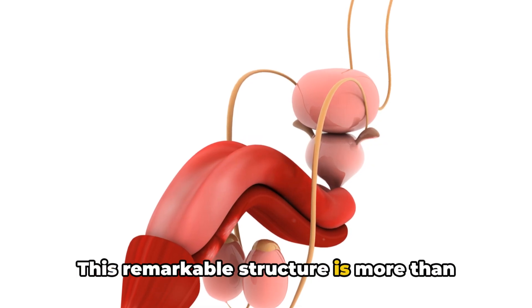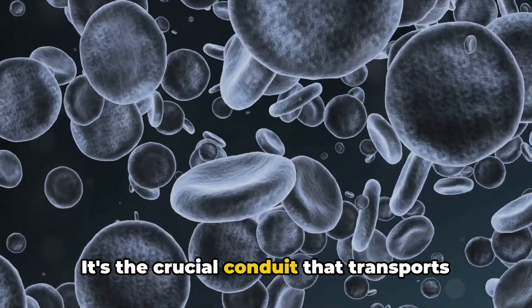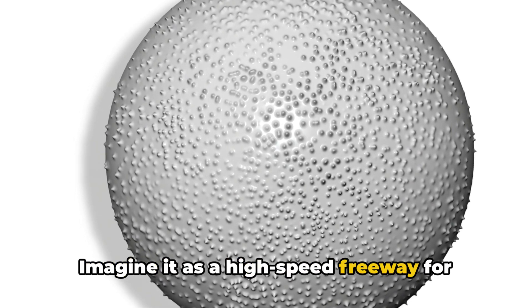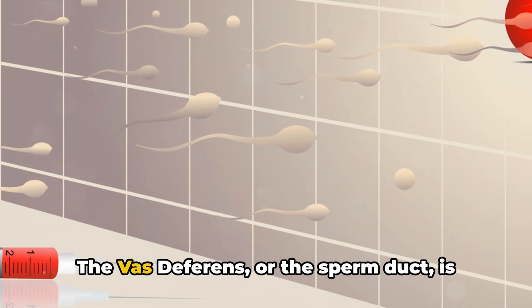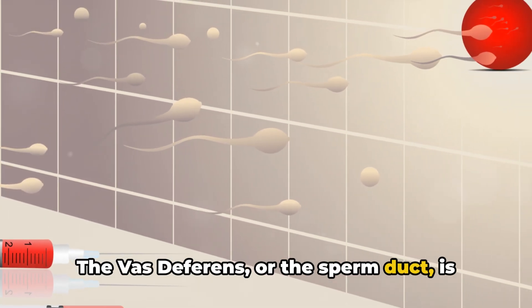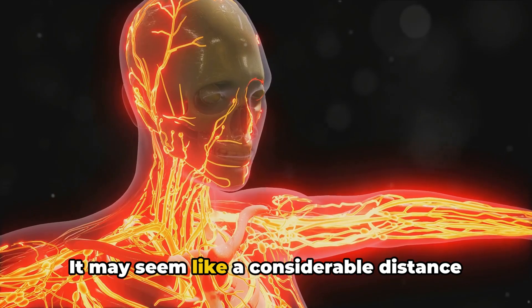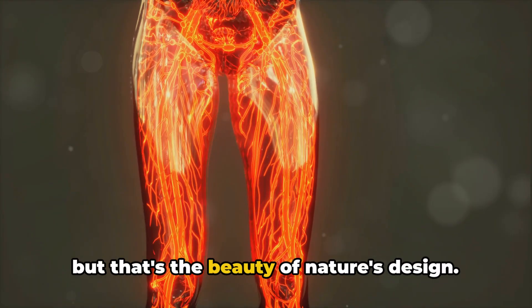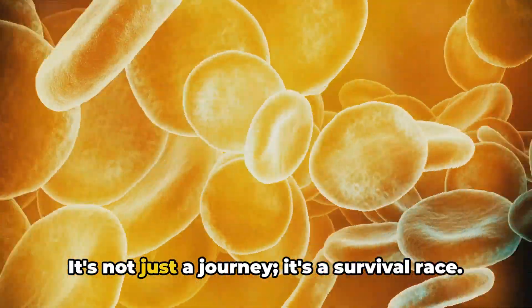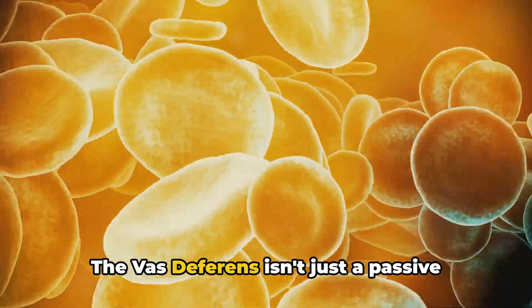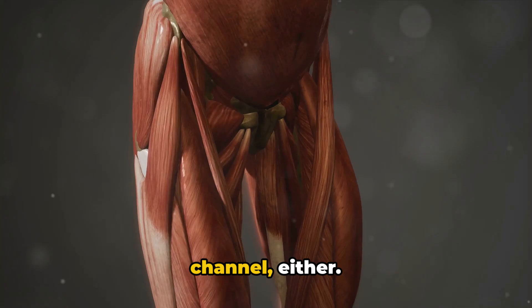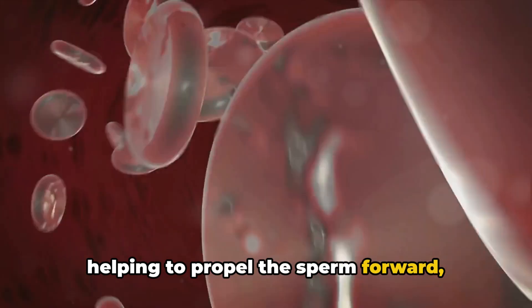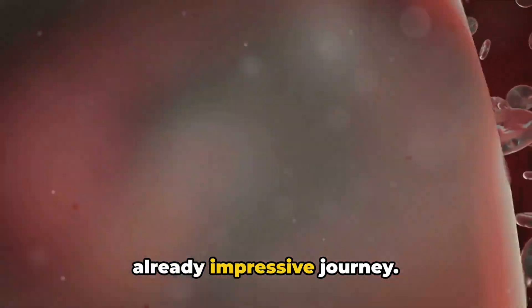Number 4 on our list takes us on a journey down the vas deferens highway. This remarkable structure is more than just a tube. It's the crucial conduit that transports sperm from the testes to the outside world. Imagine it as a high-speed freeway for these microscopic travelers. The vas deferens, or the sperm duct, is about 18 inches long. It may seem like a considerable distance for something so small as a sperm cell, but that's the beauty of nature's design. It's not just a journey, it's a survival race. The vas deferens isn't just a passive channel either. Its muscular walls rhythmically contract, helping to propel the sperm forward, adding a little extra speed to their already impressive journey.